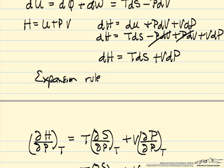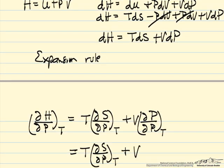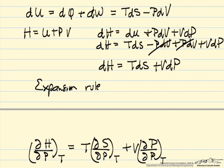And now notice this partial of S with respect to P. We have this Maxwell relation, so we can substitute the Maxwell relation here. Now I've made this substitution, and now I have this partial of H with respect to P.